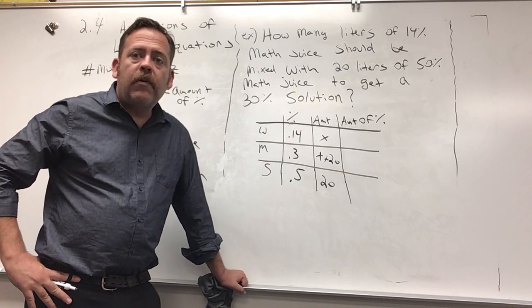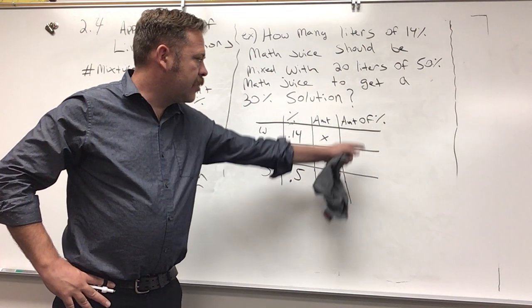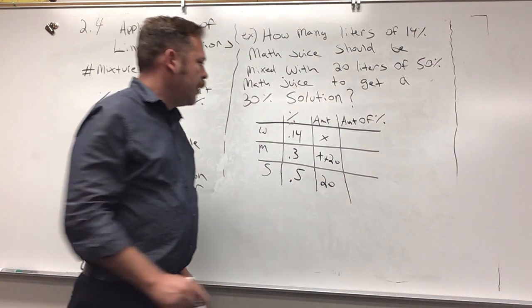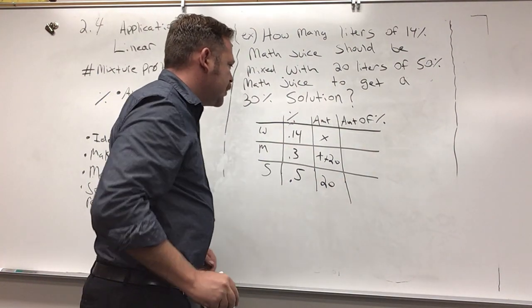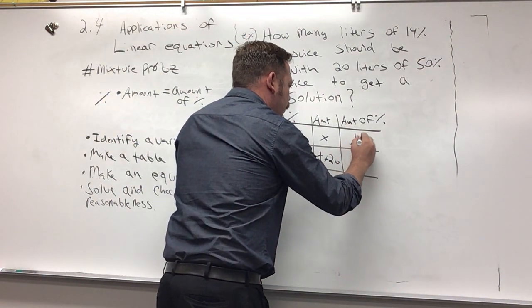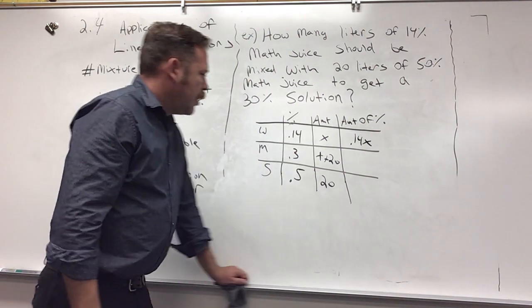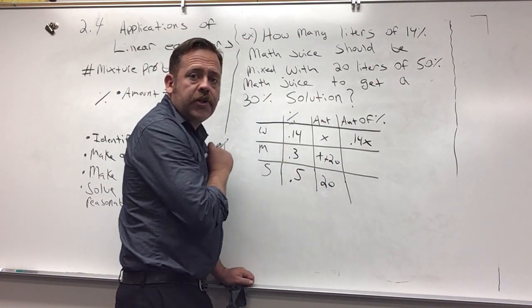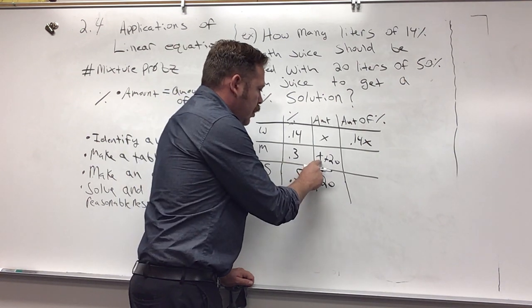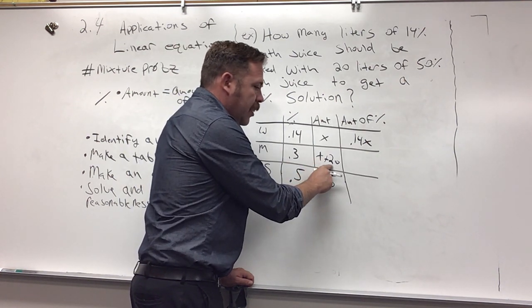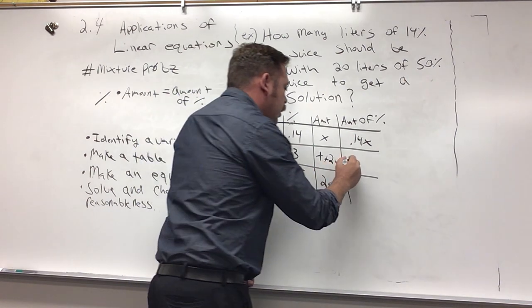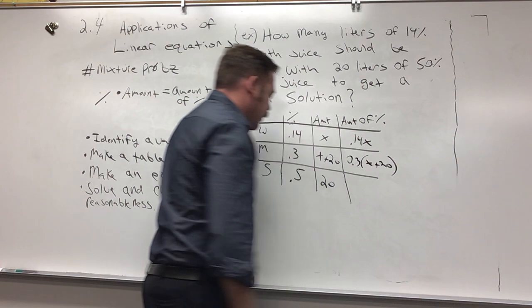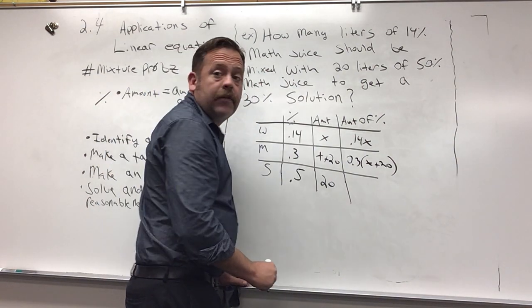Remember how do I get this third column? All the time, every time, yep, multiply. So 0.14 times x, I would like to write that as 0.14x, and then 0.3 times x plus 20. Since I have two terms here I'm going to have to use distribution, so 0.3 times x plus 20, and then 0.5 times 20.